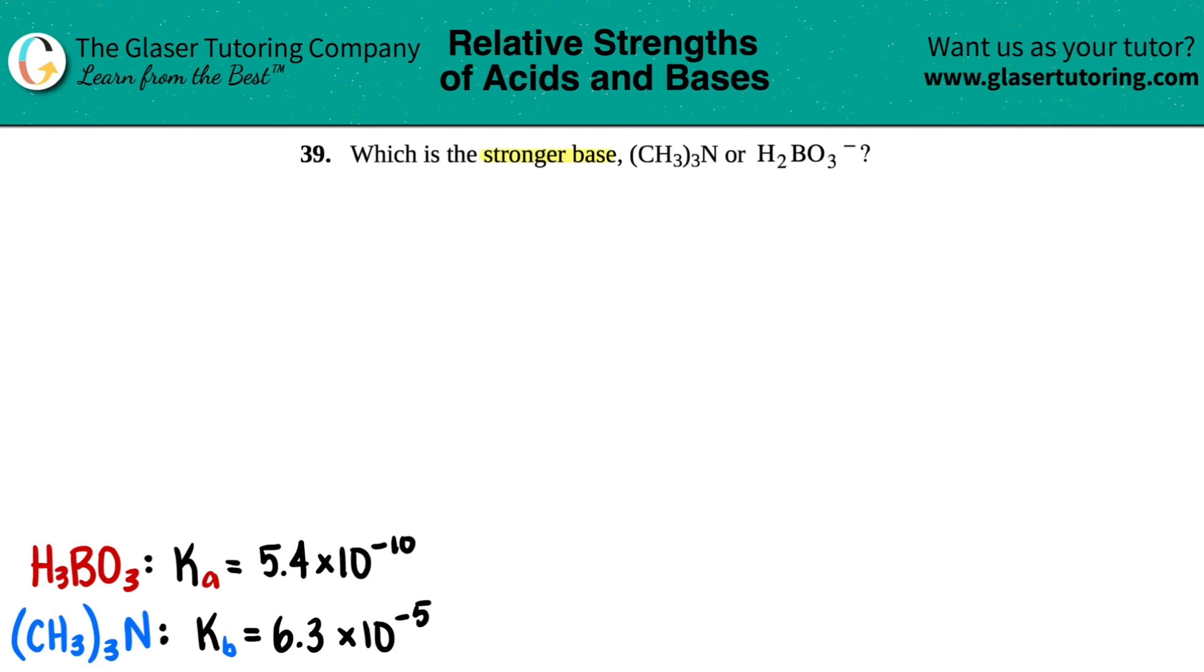The only way to answer this question is if you pull up Ka values and Kb values. These are from the appendix of a textbook. I went into the back of the textbook to find out what they told me.